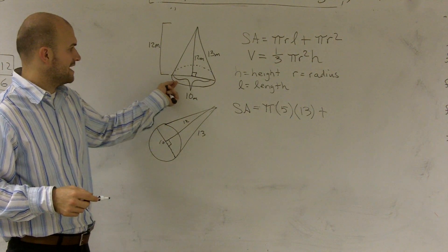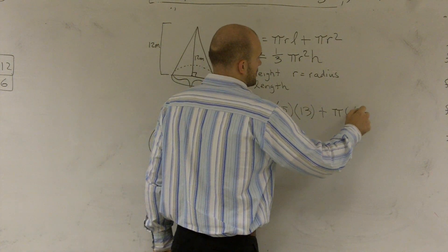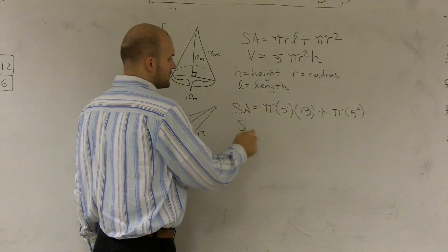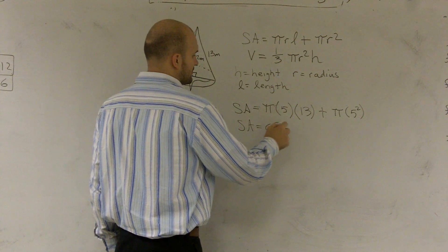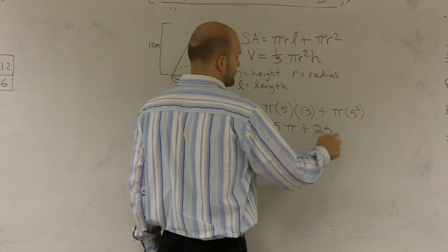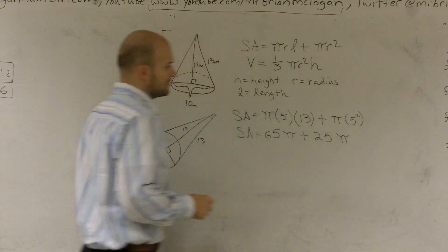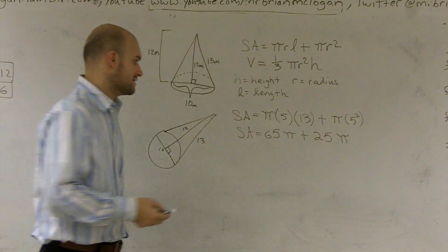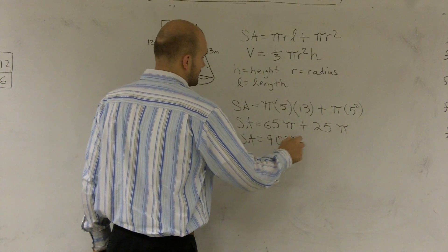My radius is 5, so 5 squared is 25. The surface area in terms of pi: 5 times 13 gives me 65π plus 25π. Since these are like terms, I add them together to give surface area equals 90π.